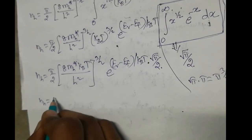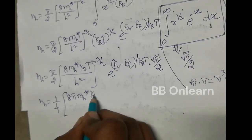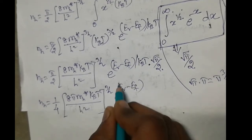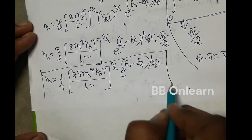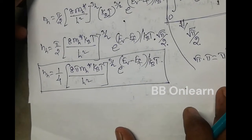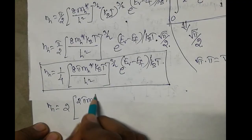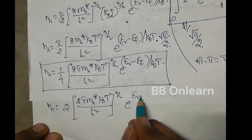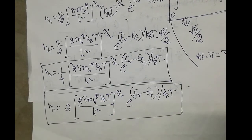Using √π × π = π^(3/2) and combining all factors, the final expression is: nH = (1/4)(8π mh* kBT / h²)^(3/2) × e^((Ev−ef)/kBT). Simplified further: nH = 2(2π mh* kBT / h²)^(3/2) × e^((Ev−ef)/kBT). This is the carrier concentration, or density of holes in the valence band.